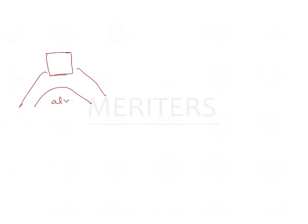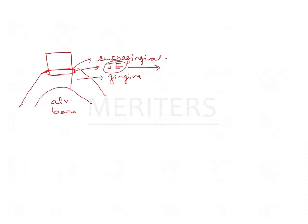To understand margin placement: this is a tooth in the socket, this is your alveolar bone, and this is your gingiva. If you want to place the margin supragingivally, no problem — go ahead as it is. If you want to give a subgingival margin, then some gingiva is affected and the junctional epithelium is affected, but the total biologic width is still around 2 mm or greater, so biologic width has not been touched in this case.